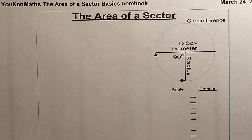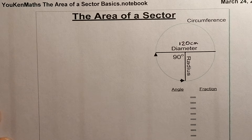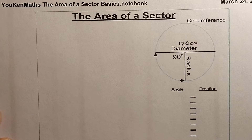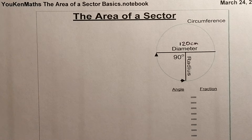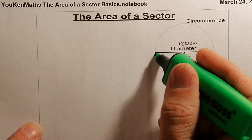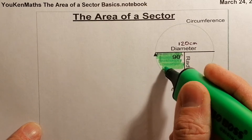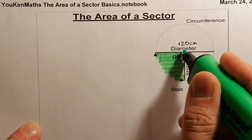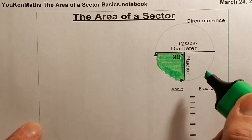Today we're learning to calculate the area of a sector of a circle. My previous video was on the length of an arc, and it might be worth watching that one before you look at the area of a sector. A sector of a circle is a small piece of the circle — the shaded area we're going to work out here is called a sector, or a sector of a circle.